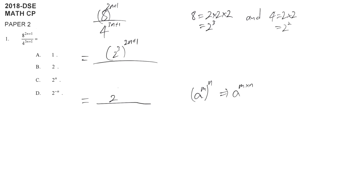3 times (n+1) gives us 6n+3, so we have 2^(6n+3). For the denominator, we replace 4 with 2^2, and similarly get 2^(6n+2).